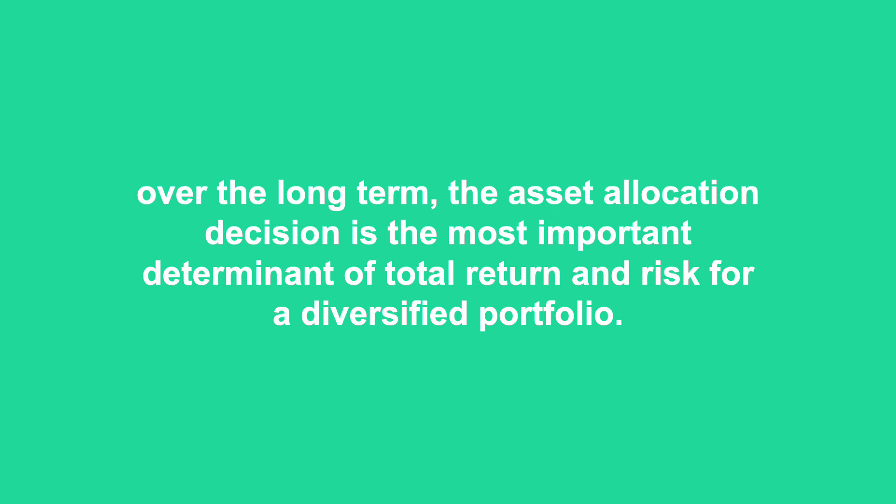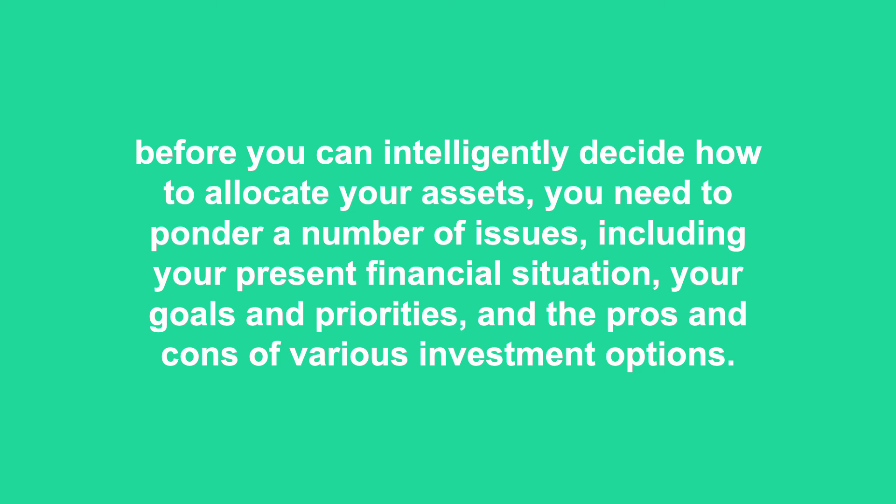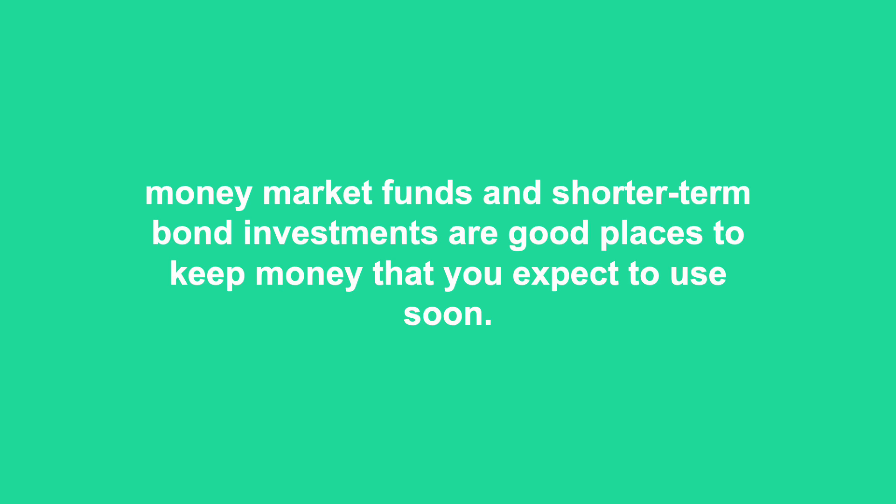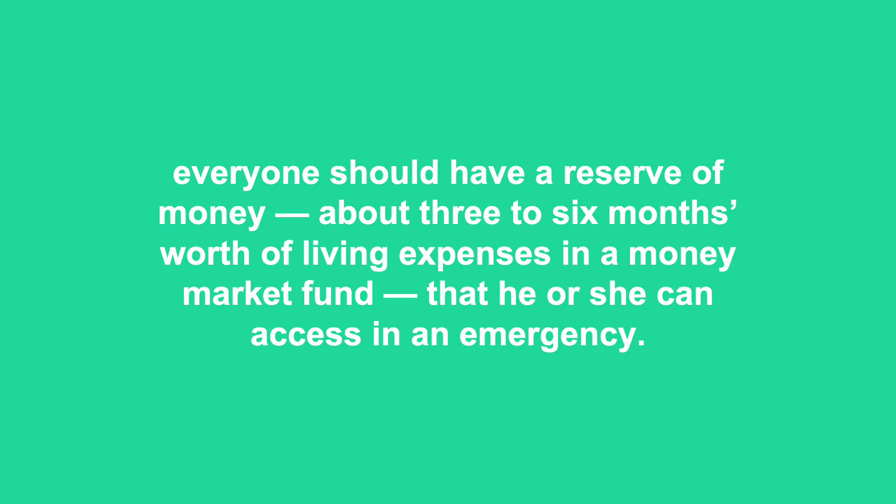Before you can intelligently decide how to allocate your assets, you need to ponder a number of issues, including your present financial situation, your goals and priorities, and the pros and cons of various investment options. Although stocks and real estate offer attractive long-term returns, they can sometimes suffer significant declines. These investments aren't suitable for money you may need within the next five years. Money market funds and shorter-term bond investments are good places to keep money you expect to use soon. Everyone should have a reserve of about three to six months' worth of living expenses in a money market fund for emergencies. Shorter-term bonds can serve as a higher-yielding secondary emergency cushion.